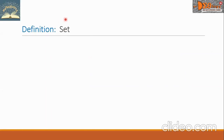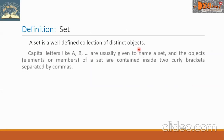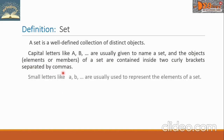Let's begin with the definition of set. A set is a well-defined collection of distinct objects. Capital letters like A, B, and so on are usually given to name a set. And the objects of a set, namely elements or members, are contained inside two curly brackets separated by commas. Small letters like A, B, and so on are usually used to represent the elements of a set.